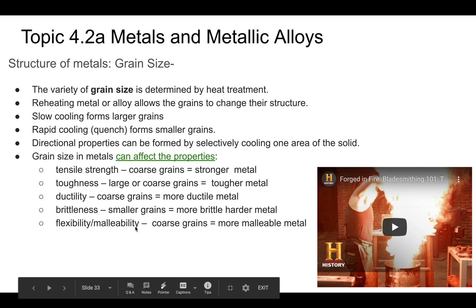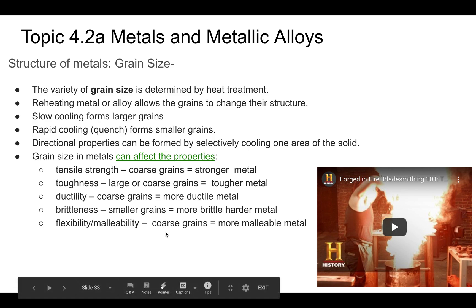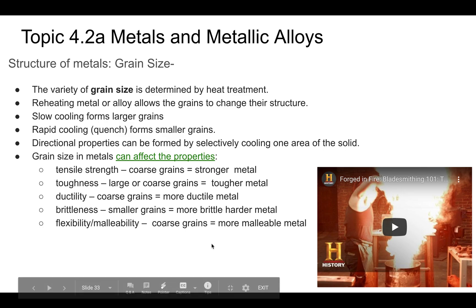Malleable means a metal can be deformed — and coarser grains are going to be more malleable. So to summarize: larger grains give you basically tougher materials, while smaller grains give you harder, sharper, but more brittle materials.